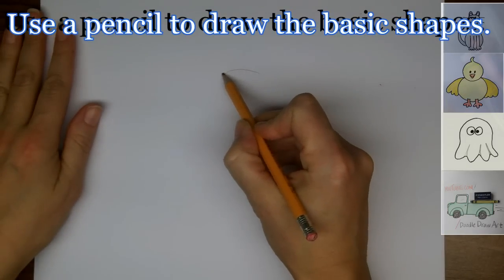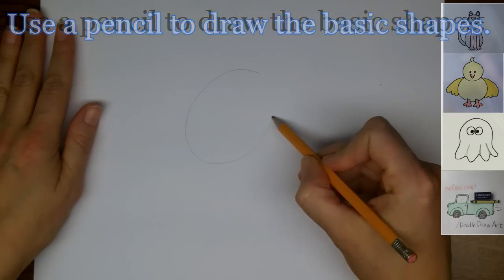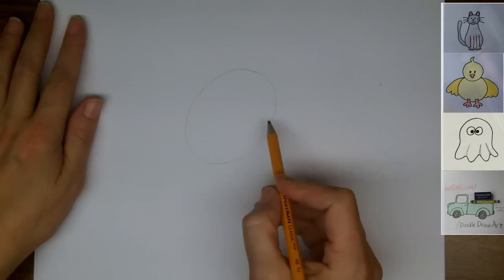We're going to start off by drawing an oval for his head, and he has his head just turned a bit to the side, so the oval is leaned over.